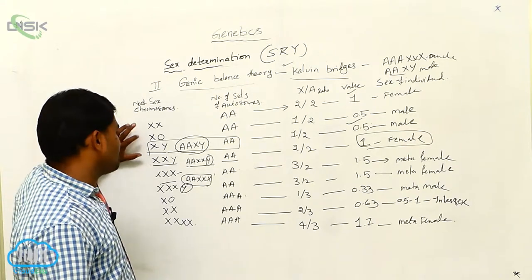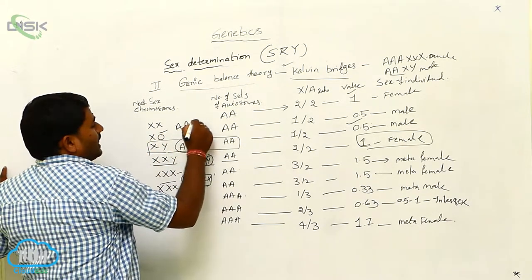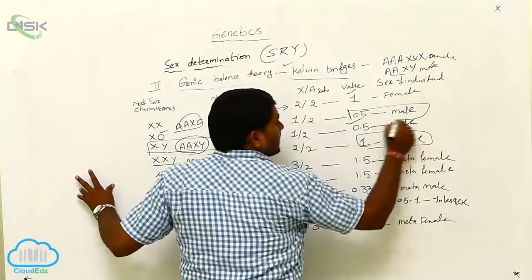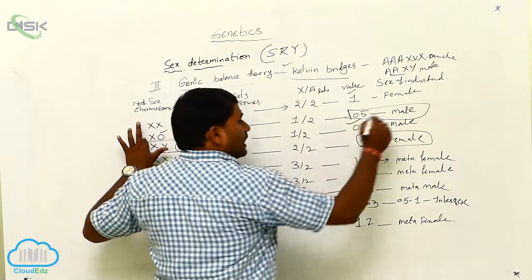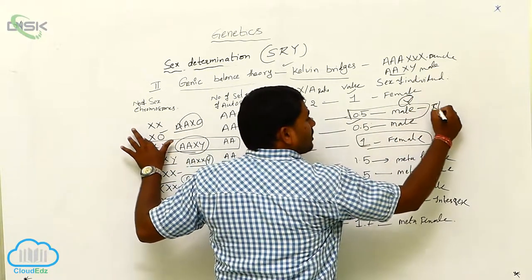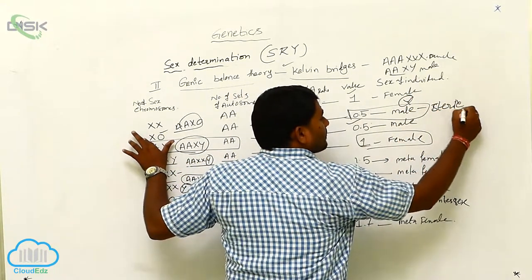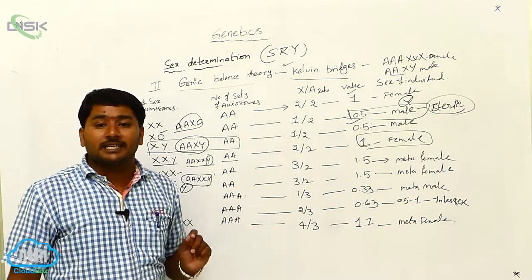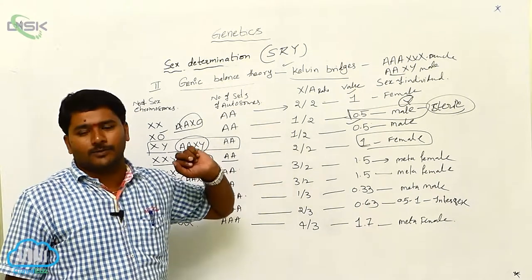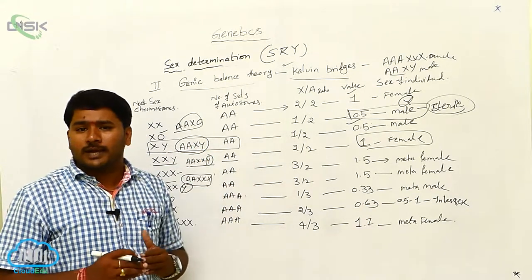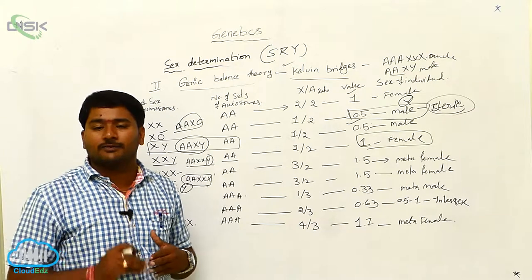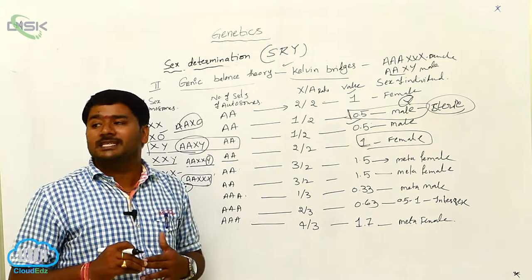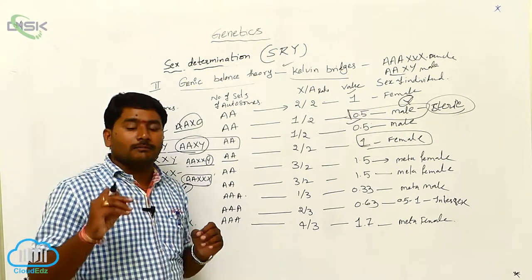And if you take, this is male. So what is the sex of this? AA, X0. This is 0.5 male. So but even though absence of Y chromosome, it is male. But it is not male. It is sterile. Why it is sterile? The maleness depends upon the presence of Y chromosome. Y chromosome has no role in the sex determination. But Y chromosome is essential for the development of maleness in the male Drosophila.